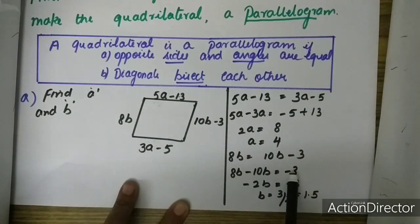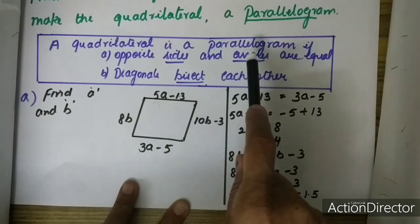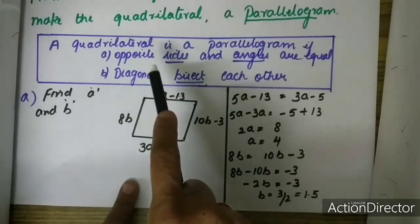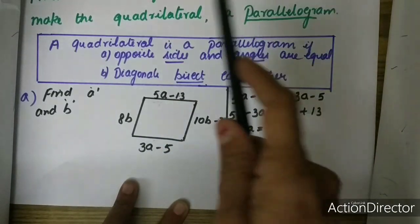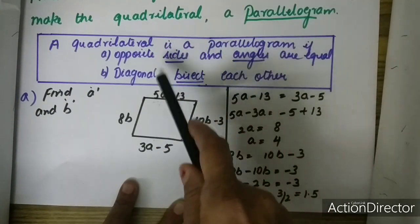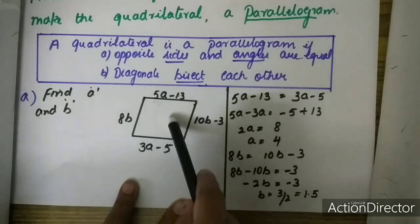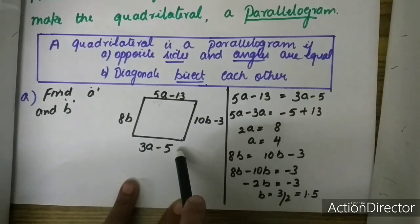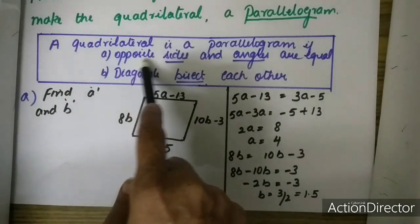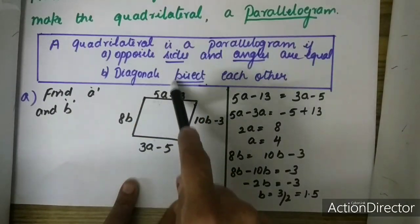You should understand the question carefully and this concept also. When the opposite sides and angles are equal, it will be a parallelogram, and when the diagonals bisect each other, then also it will be a parallelogram. Even if one condition is satisfied, you can say it will become a parallelogram. Here, since the sides are given, we are using the property that opposite sides are equal.